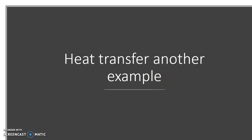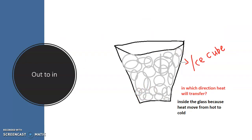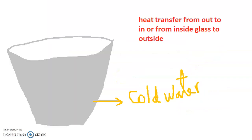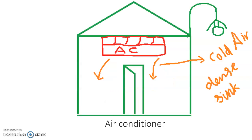Here is another example with a nice picture: a cup full of ice cubes. The question is — in which direction does heat energy transfer? Is it from inside the glass to the room, or from the room to the glass? We already know heat always transfers from hot to cold. The hot is outside, the cold is inside the glass, so heat transfers from outside the room into the glass. When the ice melts into cold water, heat still transfers from outside in, because outside is still hot and inside is still cold.